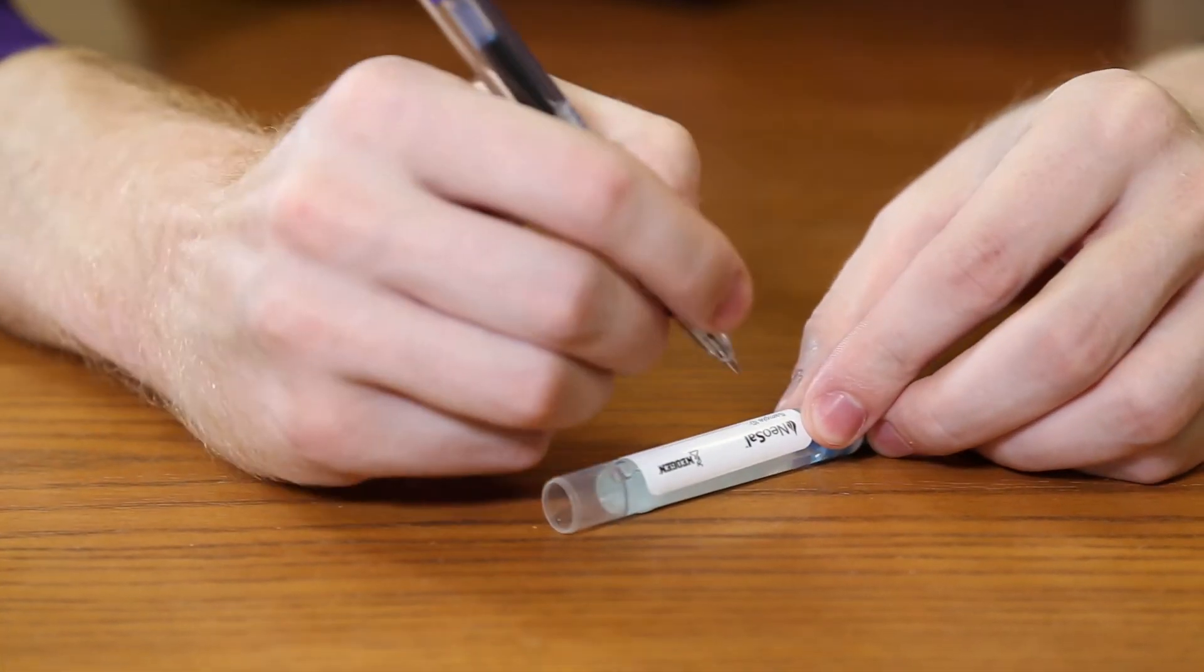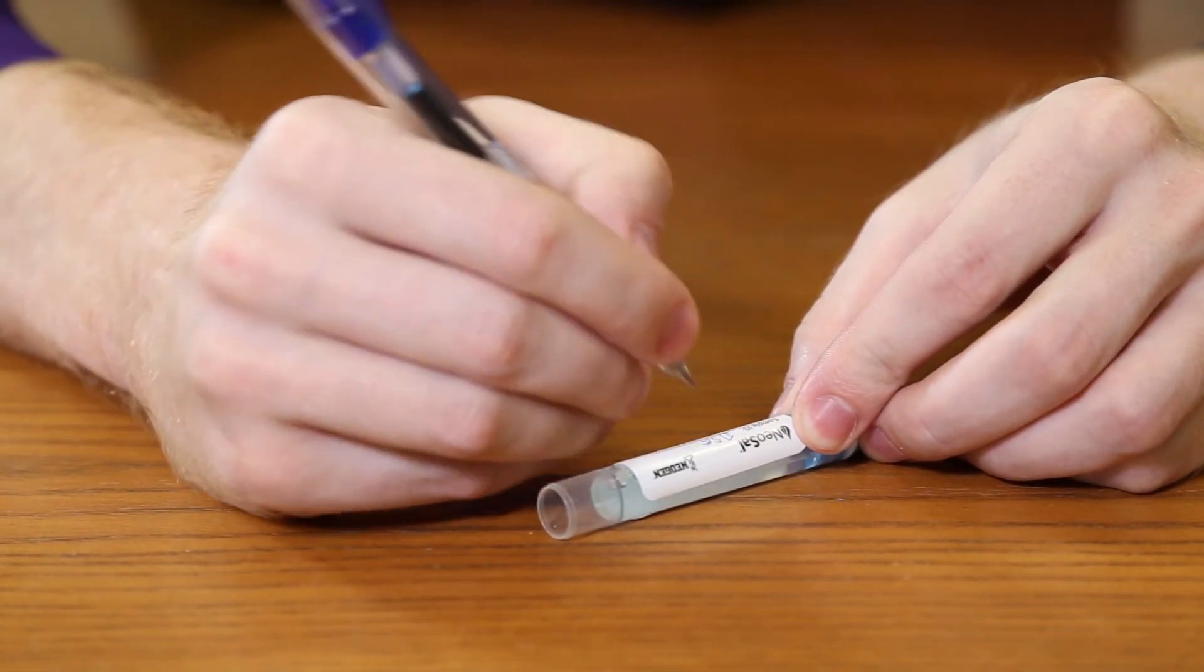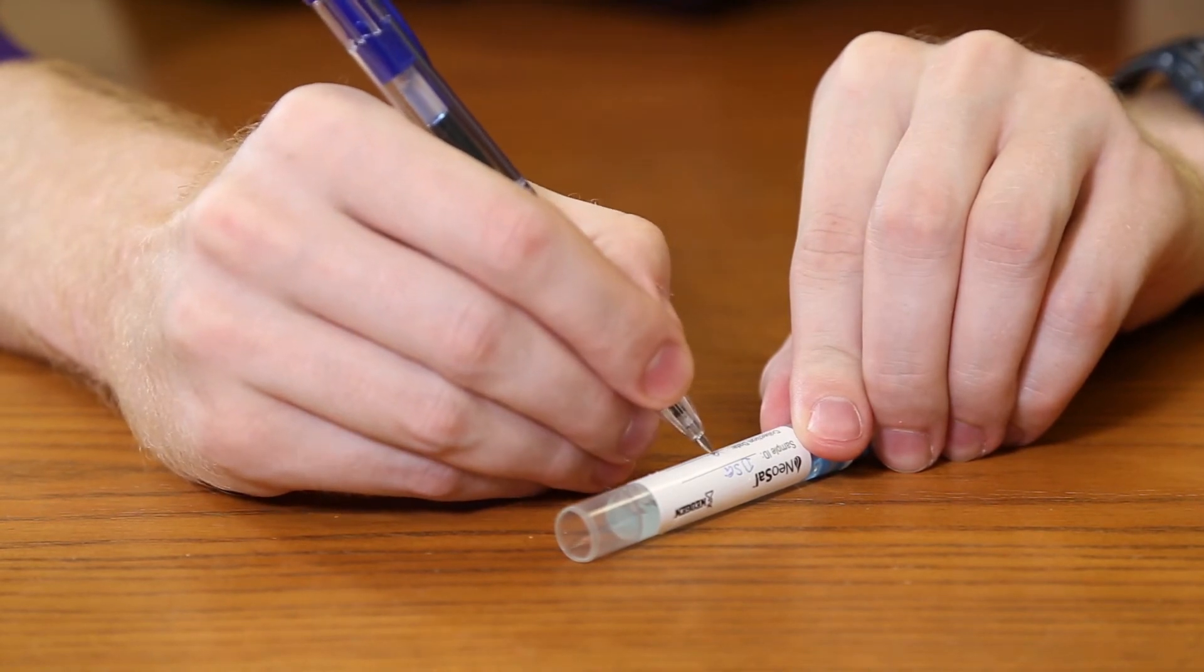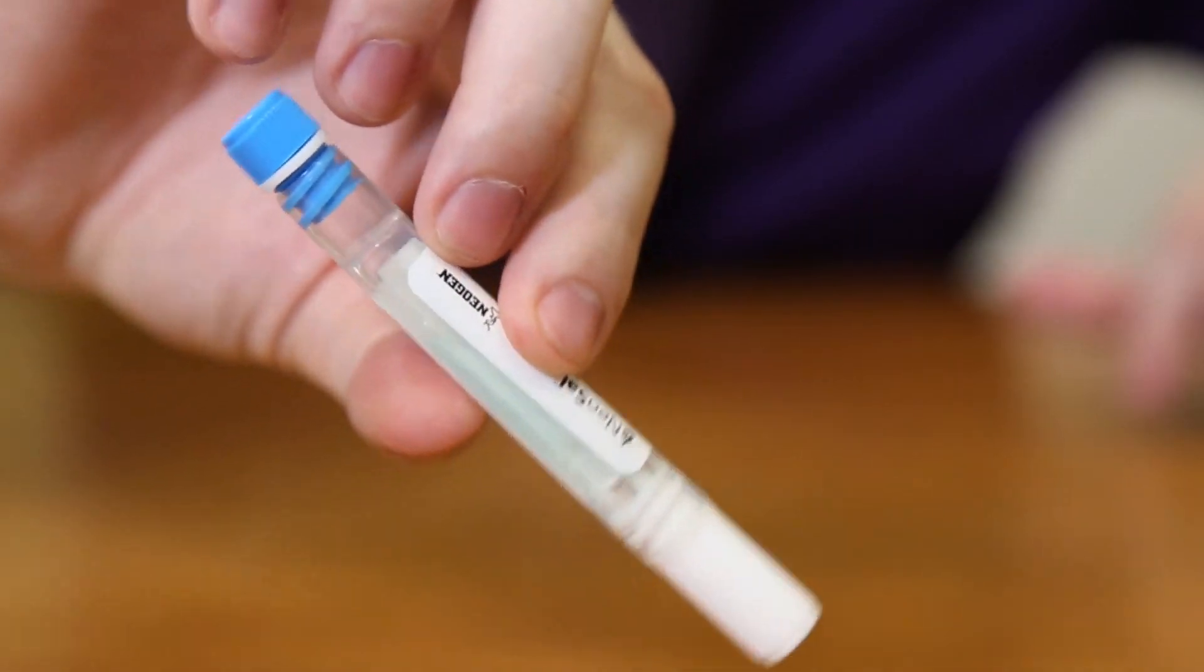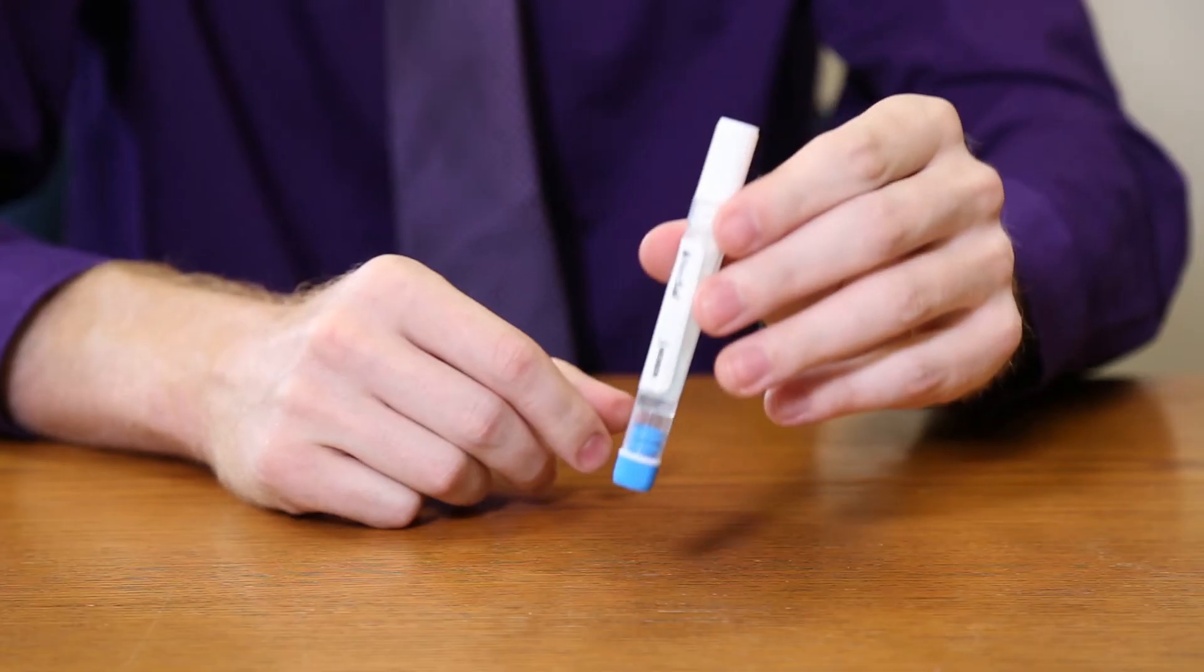Record donor information on the buffer tube label or follow the donor identification and chain of custody procedures established by the testing laboratory. Once the collection pad is secured into the buffer tube, the donor should gently invert the tube four to five times to thoroughly distribute the buffer solution onto the collection pad.